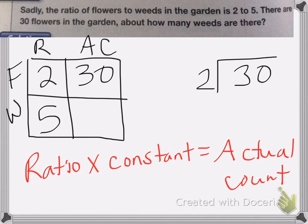So 2 goes into 3 once. That's 2. Subtract. 10. 2 goes into 10 five times. So 2 times 15 is 30. So we do 2 times 15 is 30.